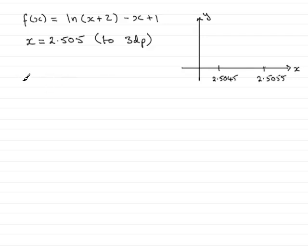So, all I need to do now is just work out what f of this minimum value would be, f of 2.5045. And if I put that into the equation, you're going to have the natural log of x plus 2. So, if we add 2 to that, you're going to get 4.5045. And then if I do minus that value plus 1, you've got minus 1.5045.